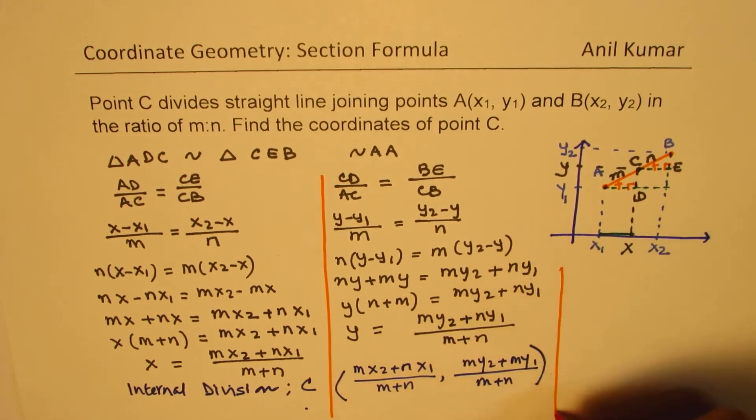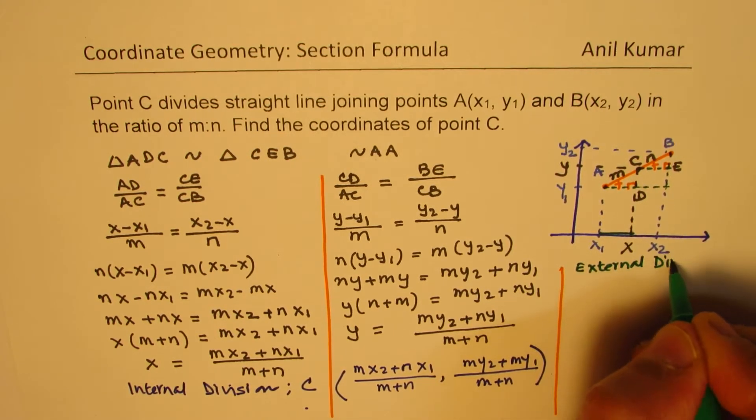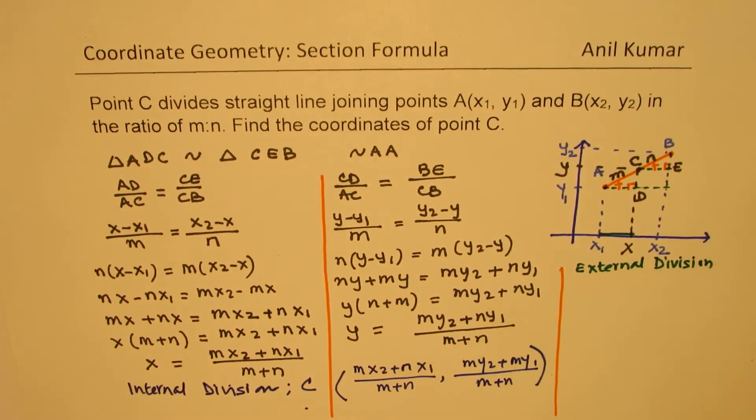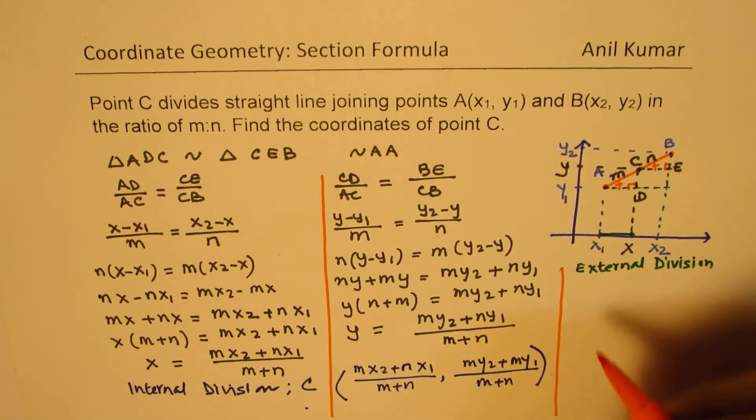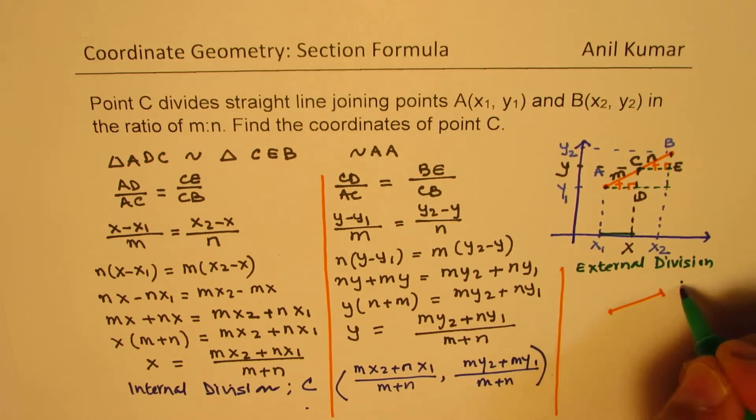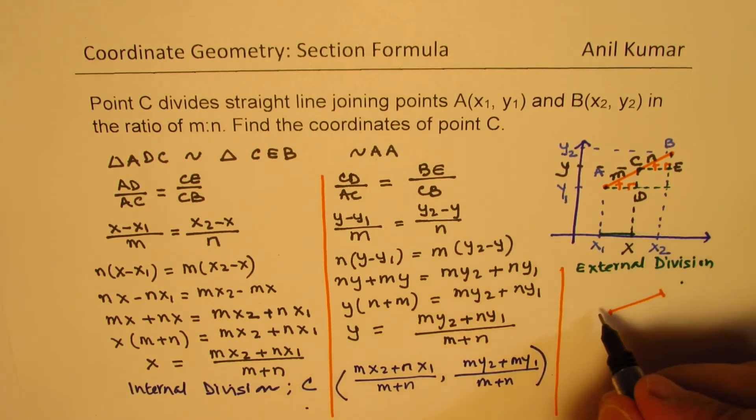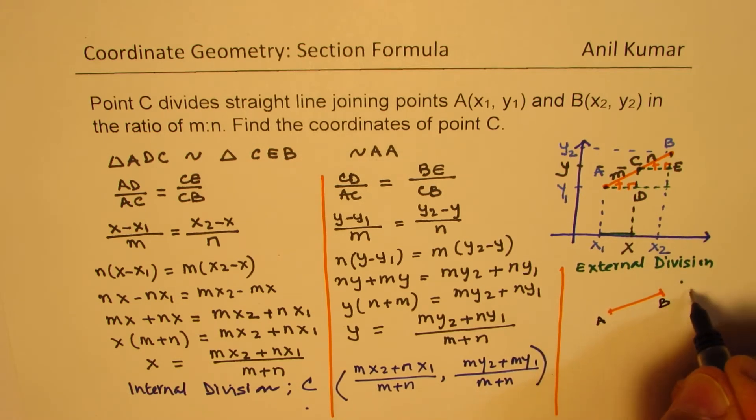However, if we have the case of external division, so we'll just extend this. If we have the case of external division, that is to say that we have a situation where the line A to B is this. However, the point C lies on the side, not in between, but away from it. So we have the situation where this is A, that is B, and C.